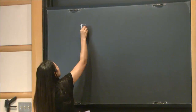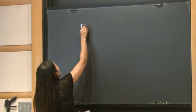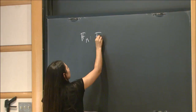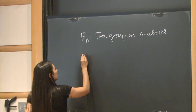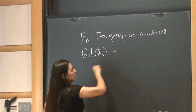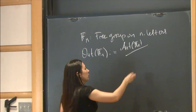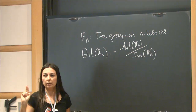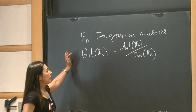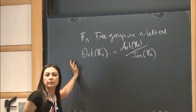Let me introduce my objects. This is going to be a free group, non-abelian, on N letters. One of my objects is the outer automorphism group of the free group — you take the automorphisms and mod out by inner automorphisms. To talk about something like this, I'm going to give two other groups as background. Most of the research done on the outer automorphism group is done by comparing it with linear groups and the mapping class group.